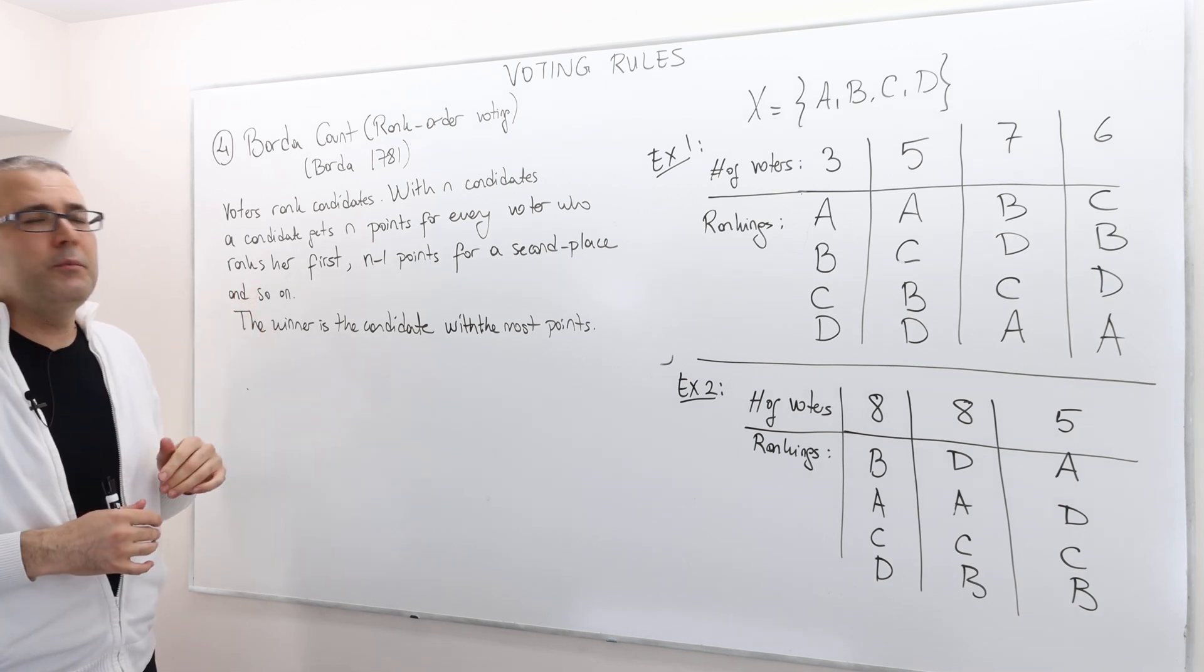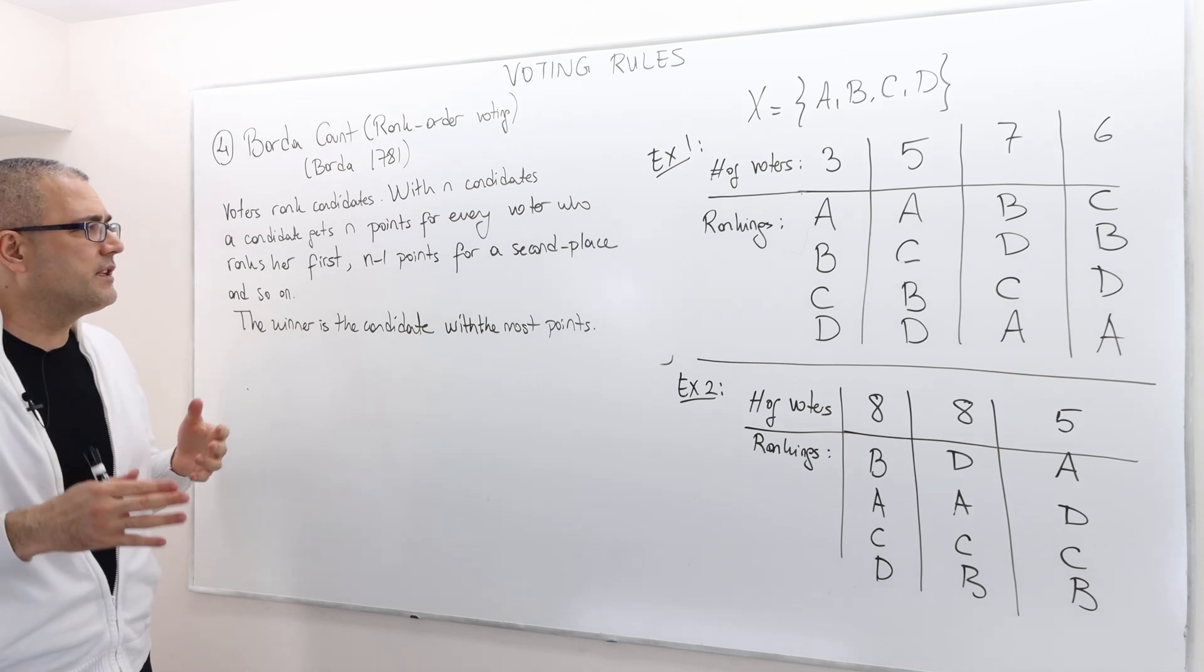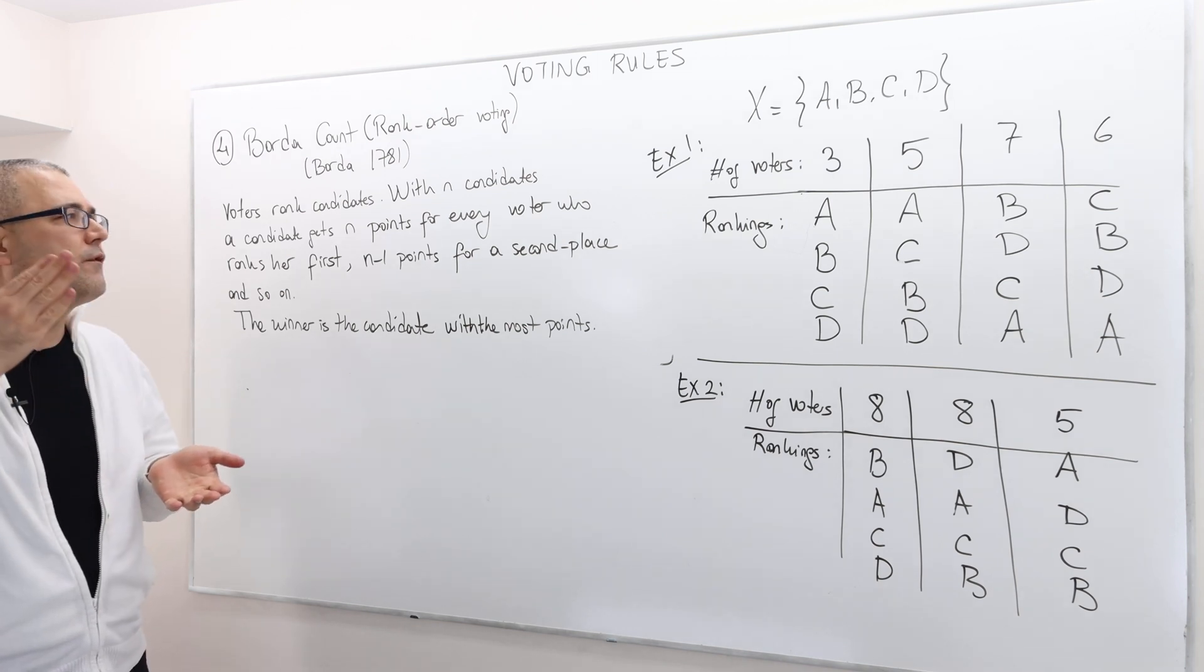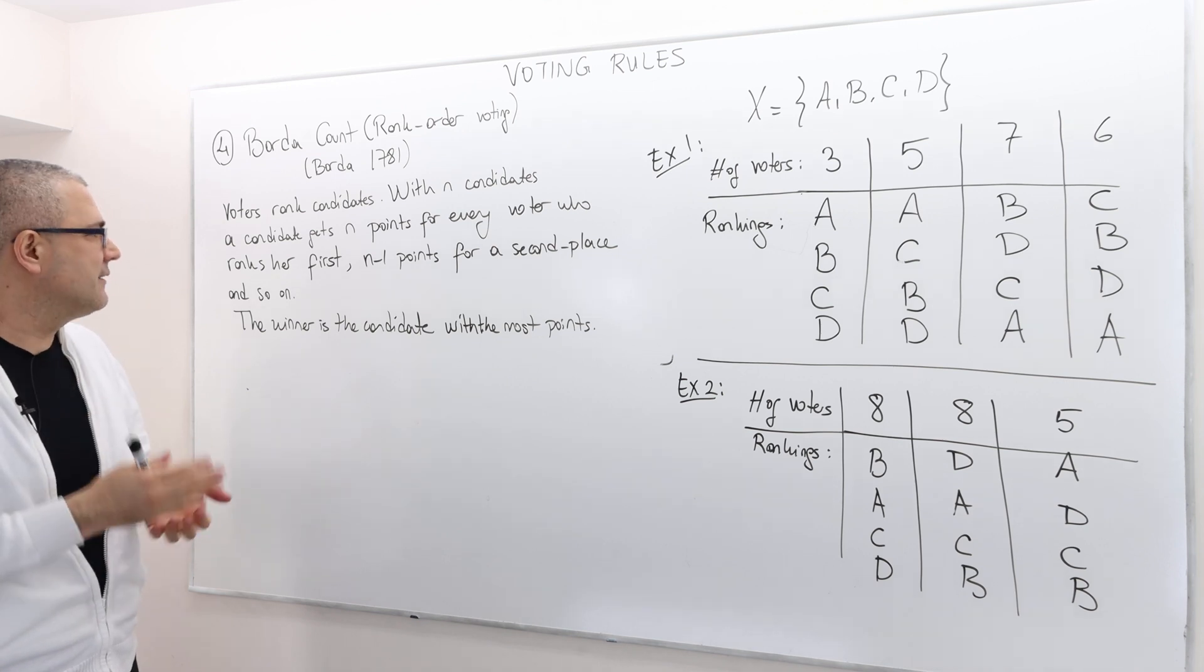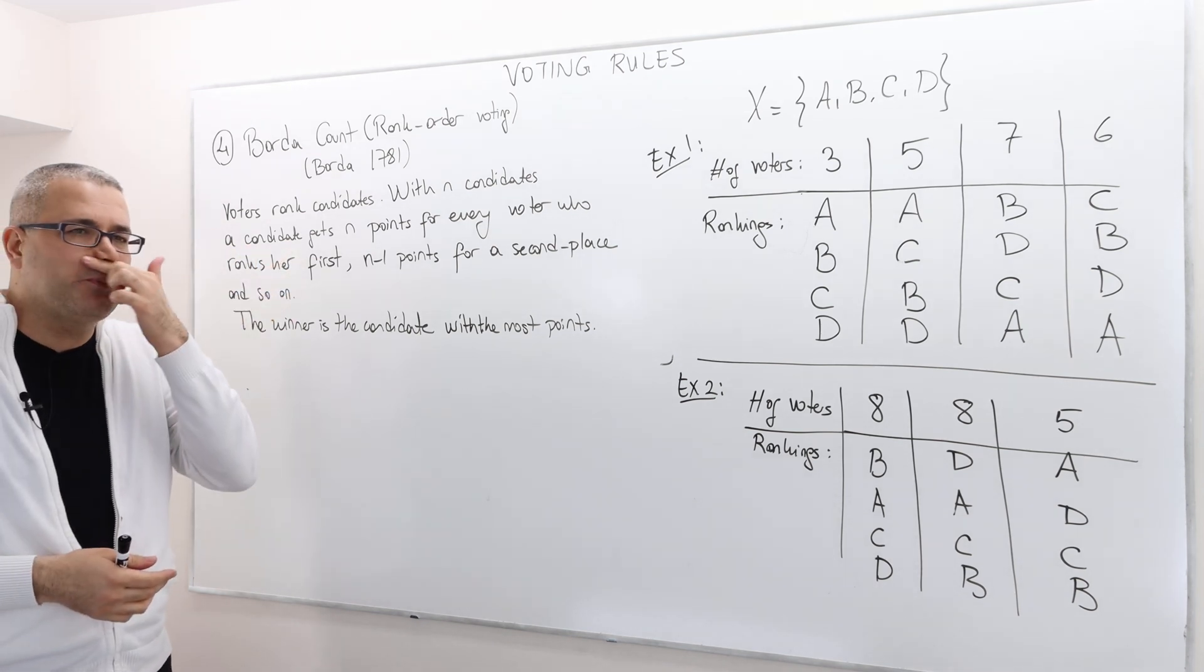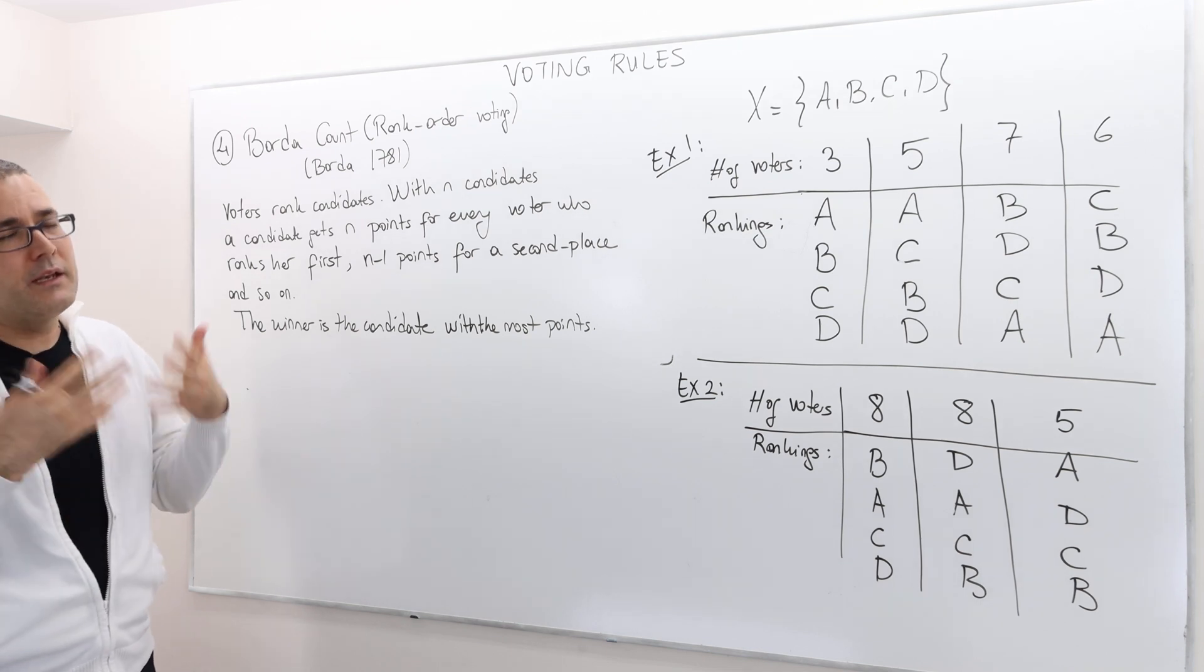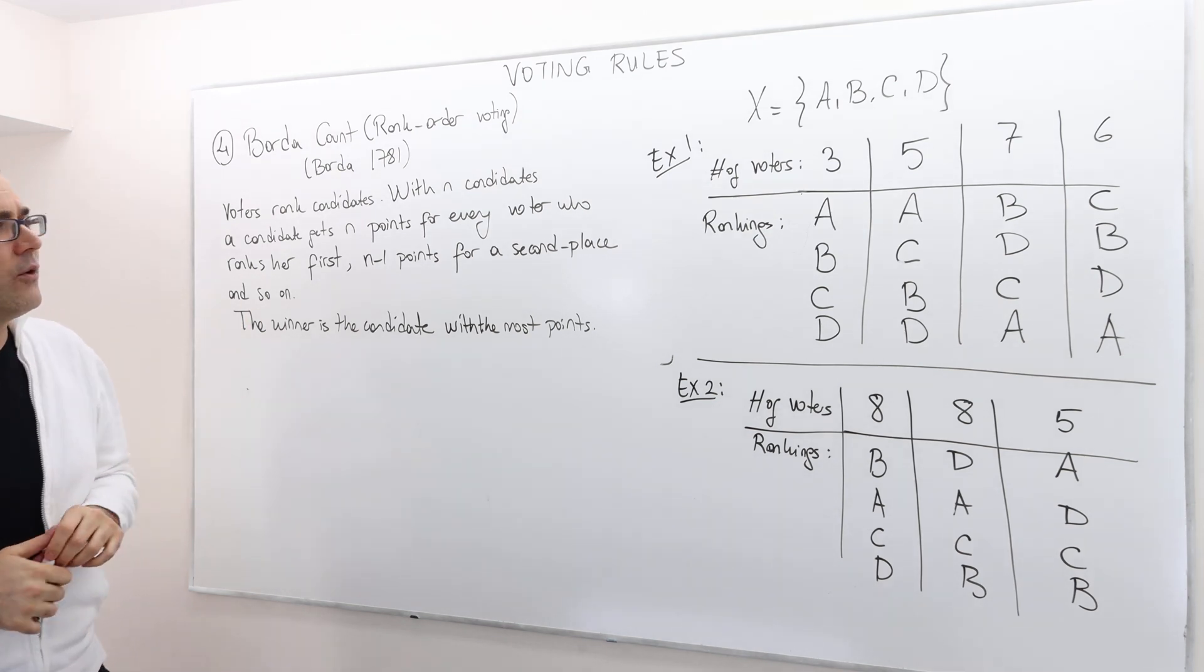Assuming that we have n many candidates, a candidate gets n points for every voter who ranks her first, n minus one points for every voter who ranks her second, and so on. We add up all those points and whoever gets the highest point becomes the winner. That's how the Borda count works.